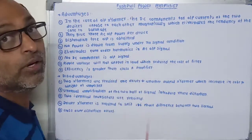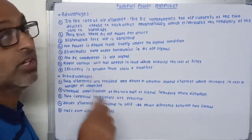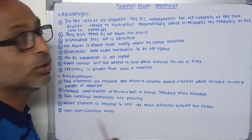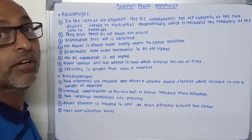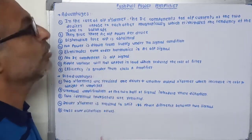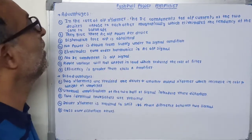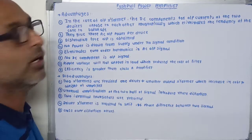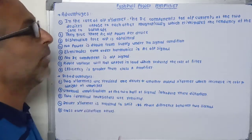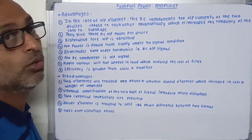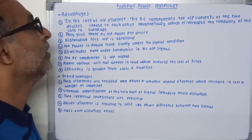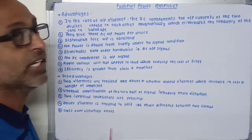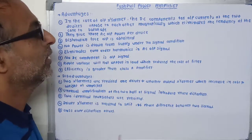Advantages and disadvantages of push-pull power amplifier. First advantage: the DC component of output currents of the two devices opposes and cancels each other magnetically, which eliminates the tendency of the core to saturate. Second, it gives more AC output power per device. Third, distortion-free output is obtained. Fourth, no power is drawn from the supply under no signal condition. Fifth, it eliminates even harmonics in the AC output signal, and there are no DC components in the output. The ripple voltage will not appear in the load, which reduces the cost of the filter circuit. The efficiency is greater than Class A type amplifier.